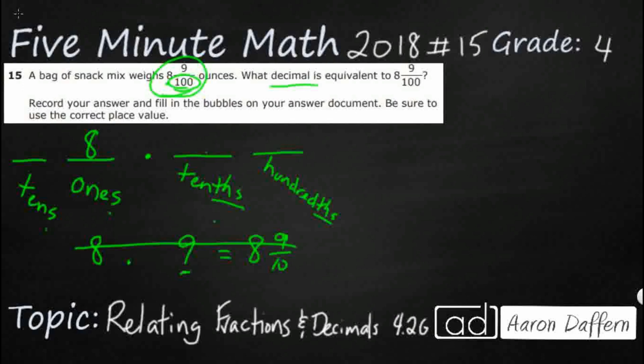which means I've got to put this nine in the place value that is being mentioned here. And I've got my one hundred. This one hundred matches this hundredths.